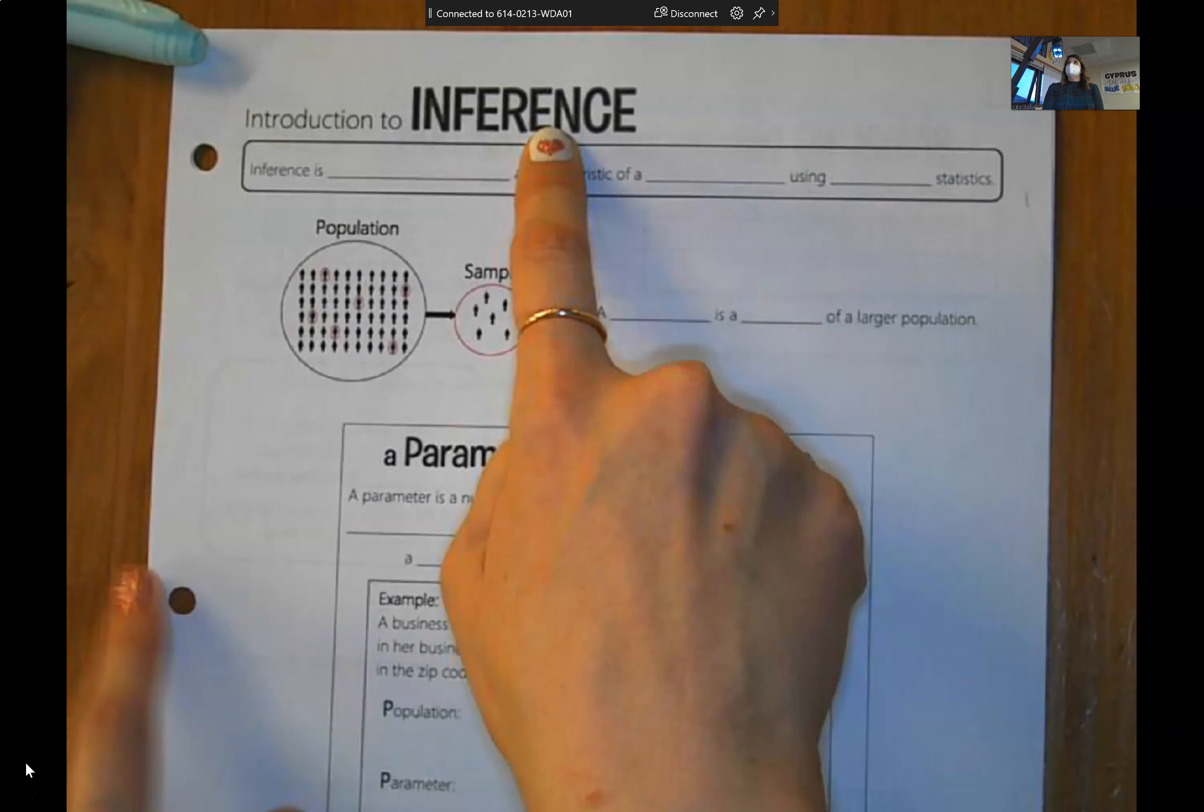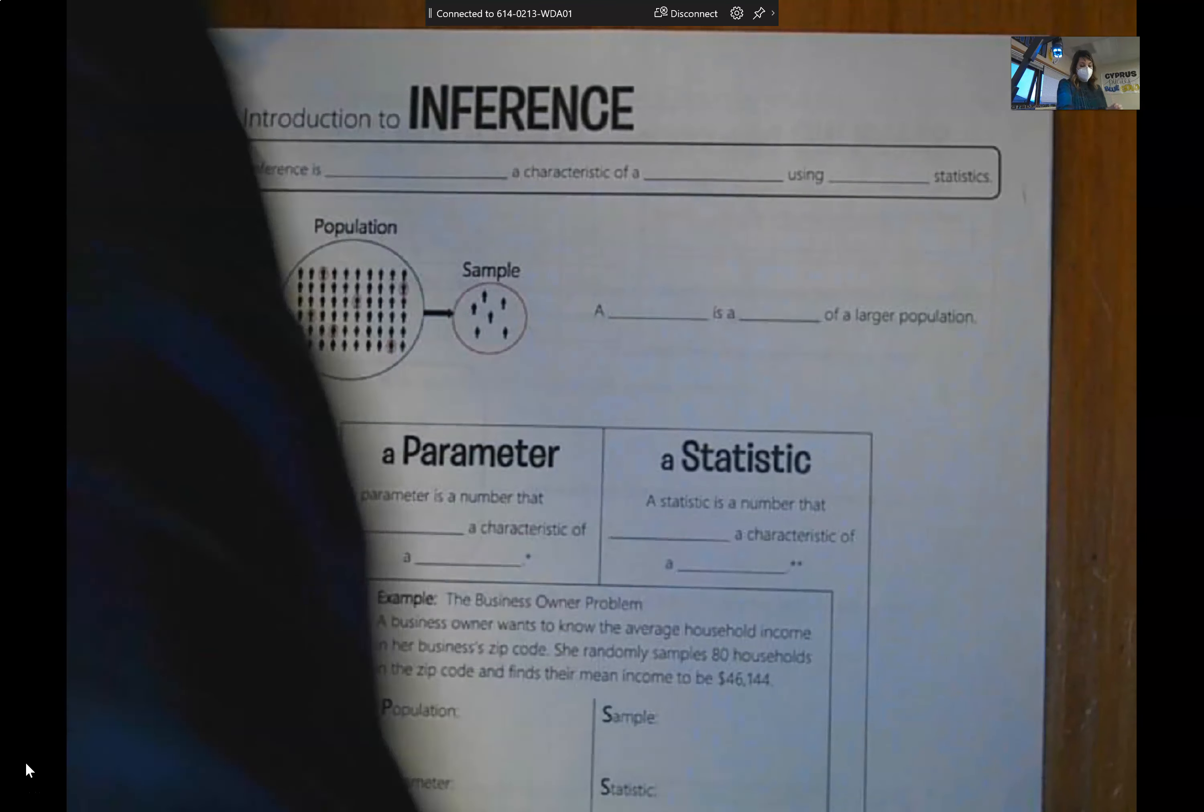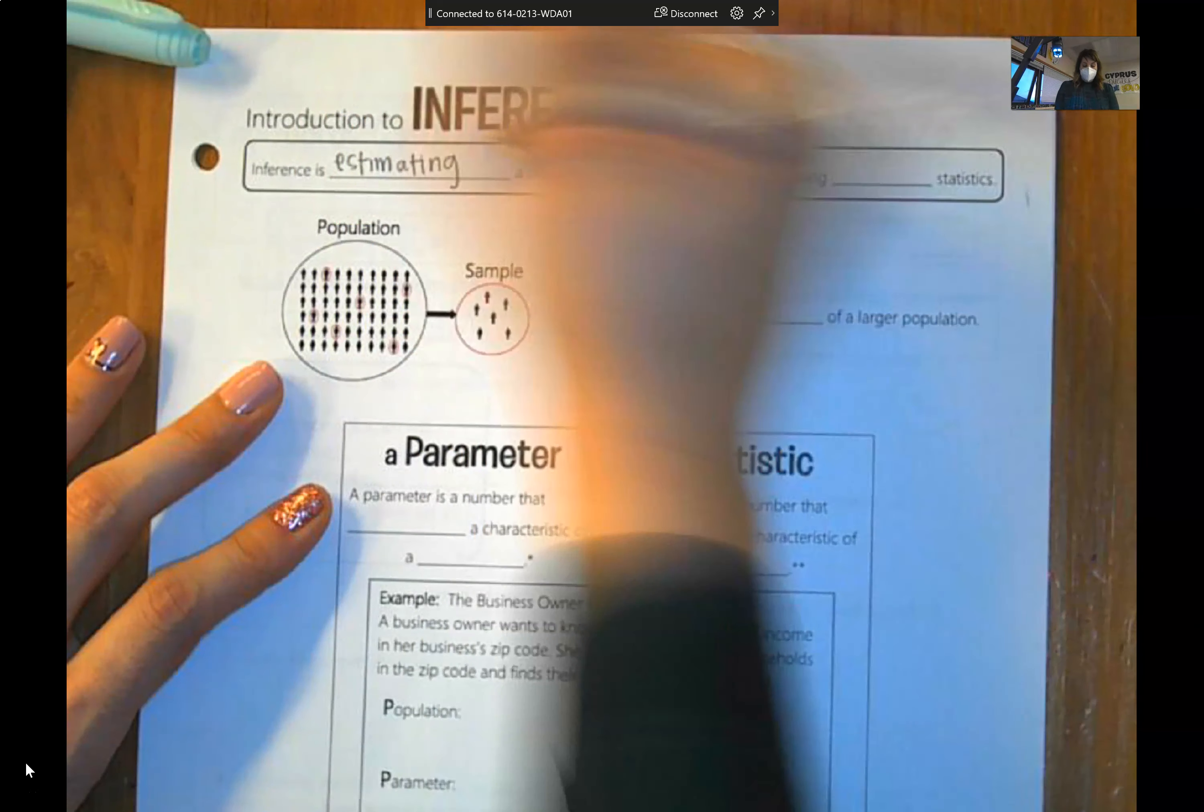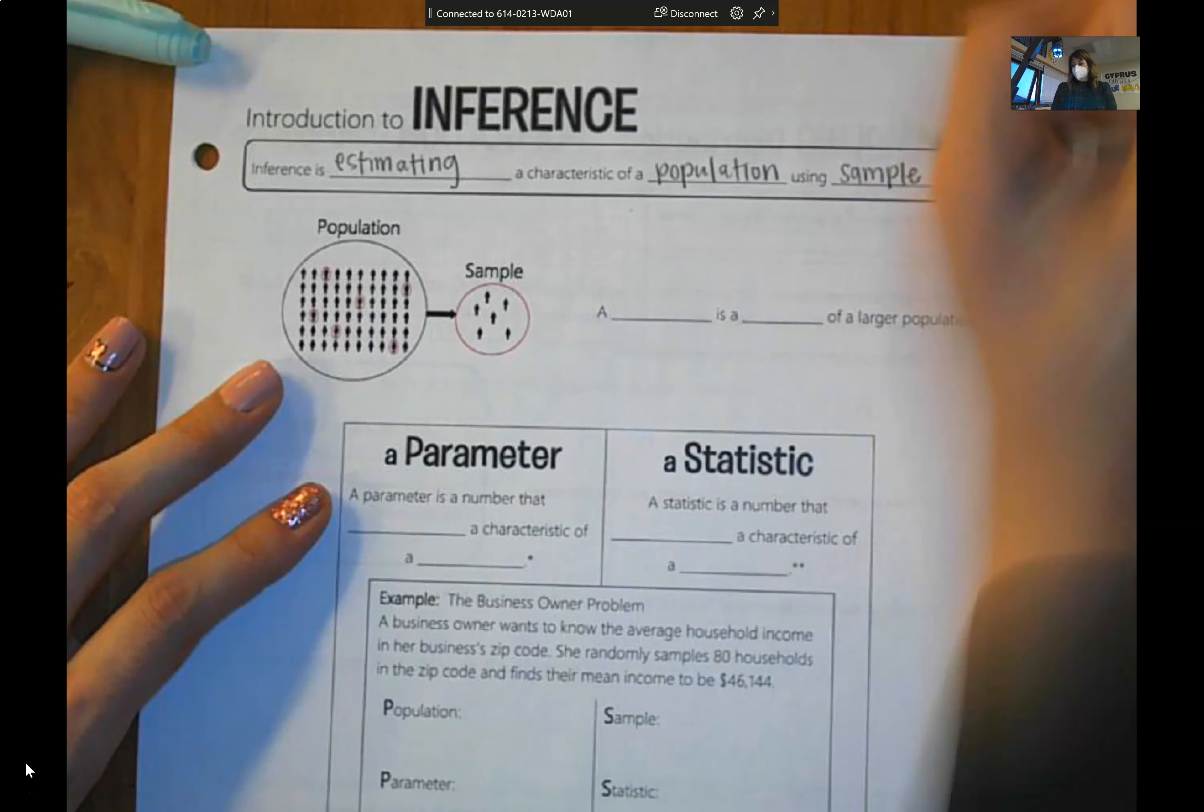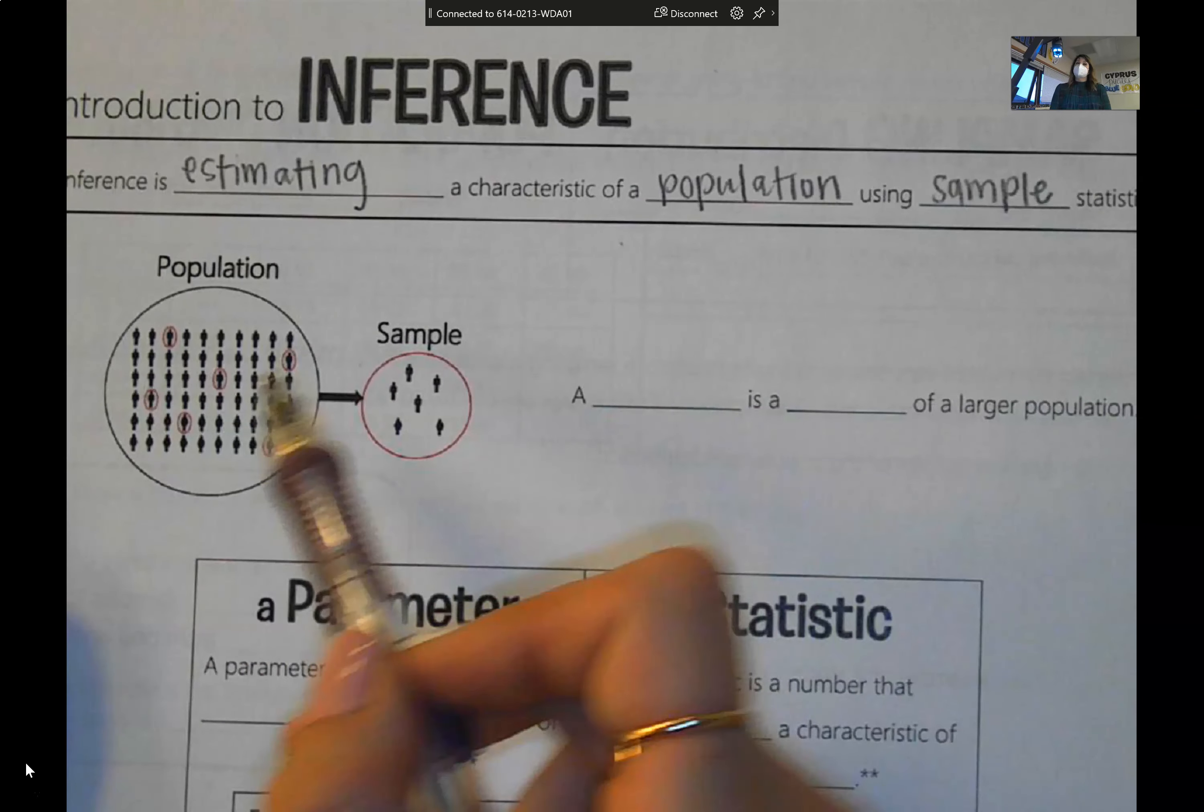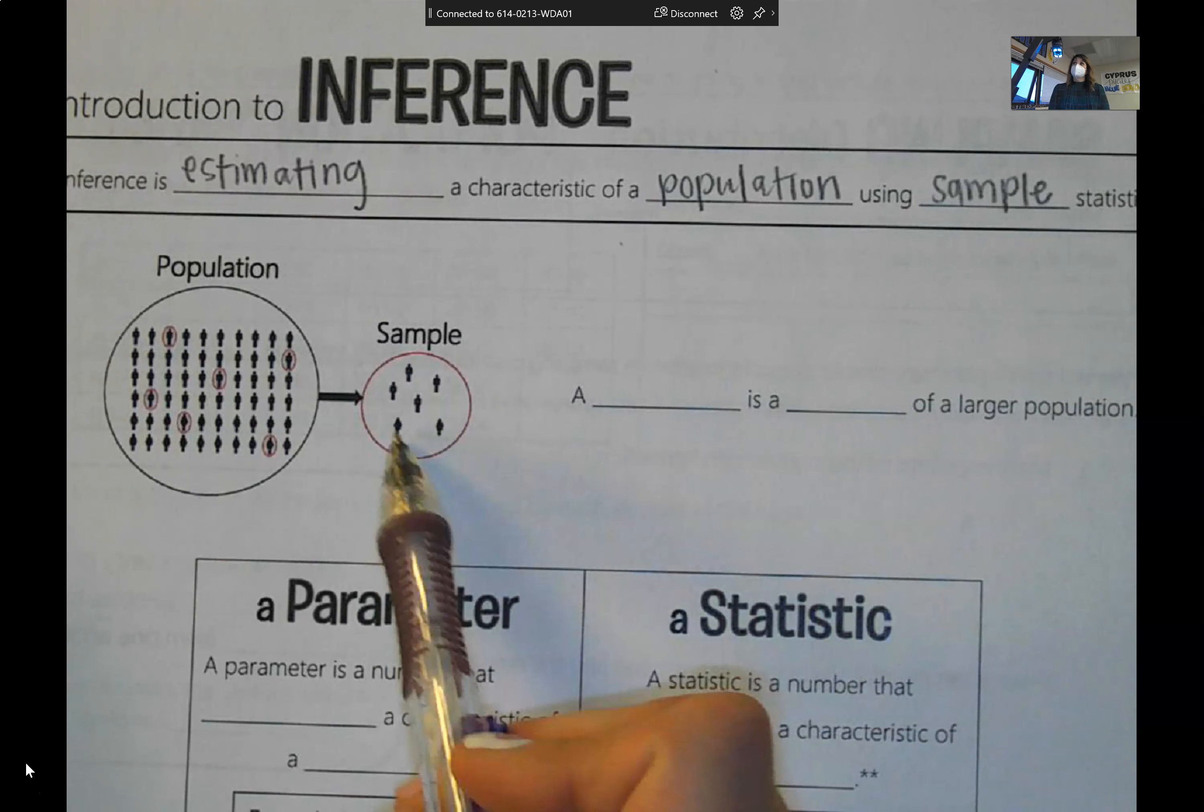This area of statistics is called inference. We're going to take a sample and make inferences about the population. So inference is estimating a characteristic of a population using sample statistics. Usually we take a sample because it's quicker or cheaper or easier. So this is just a visual of what taking a sample looks like.